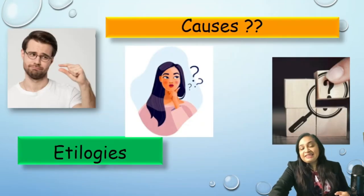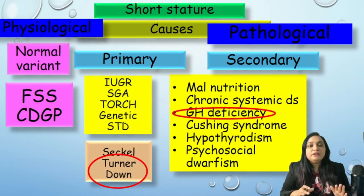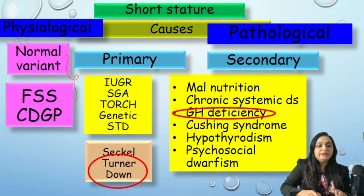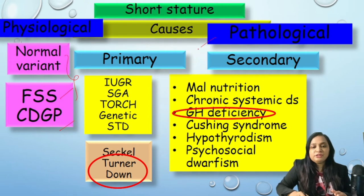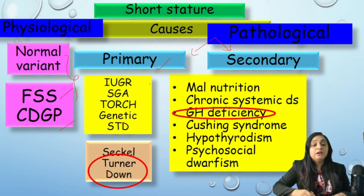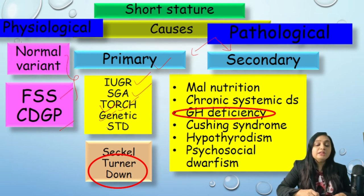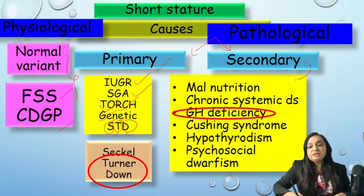Now, what are the causes of short stature? This is the etiological classification, which has nothing to do with the approach. It could be physiological — a normal variant — that is, familial short stature and CDGP (constitutional delay in growth and puberty). It could also be pathological: primary causes (the child is born with an issue) include intrauterine growth retardation, small for gestational age, TORCH infections during pregnancy, and genetic causes — the mnemonic is STD: Sickle cell syndrome, Turner syndrome, and Down syndrome.